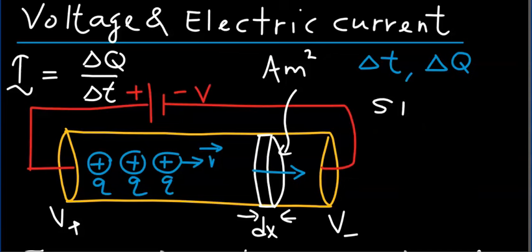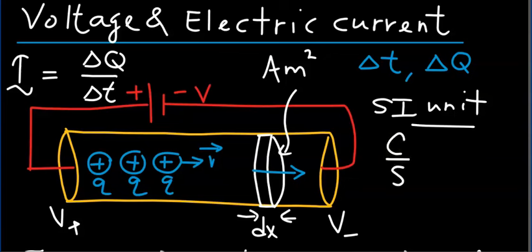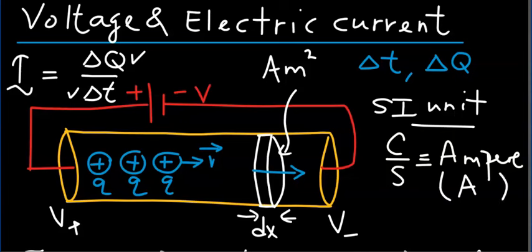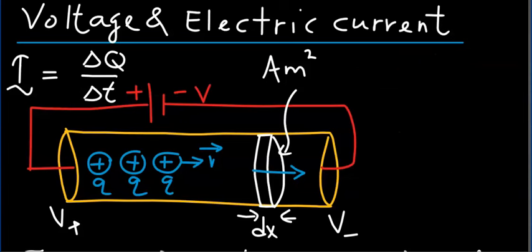The SI unit for electric current is coulomb per second — delta Q is measured in coulombs and delta T is measured in seconds — or quite simply ampere, with the abbreviation capital A. This is the general definition of electric current.